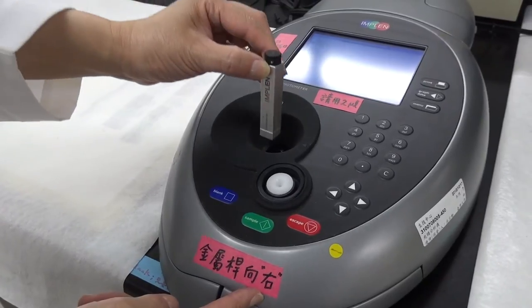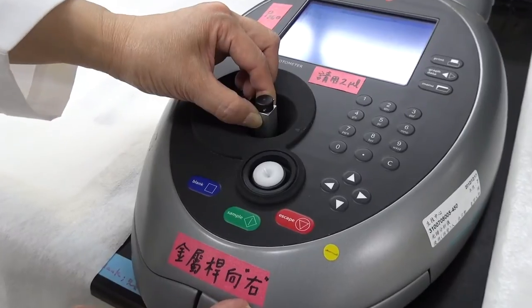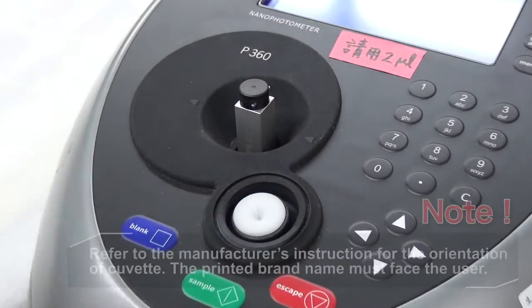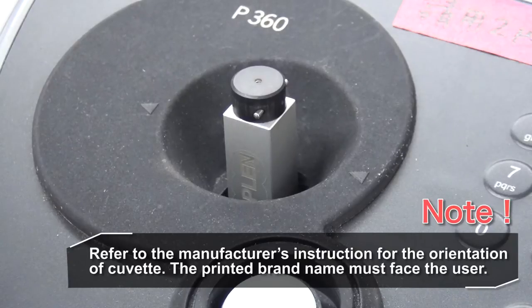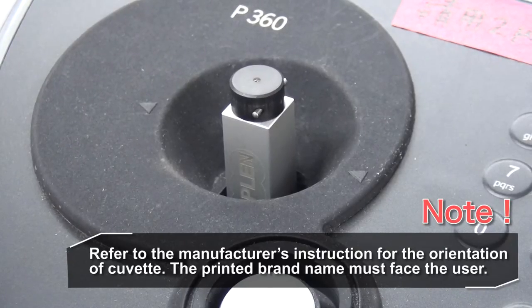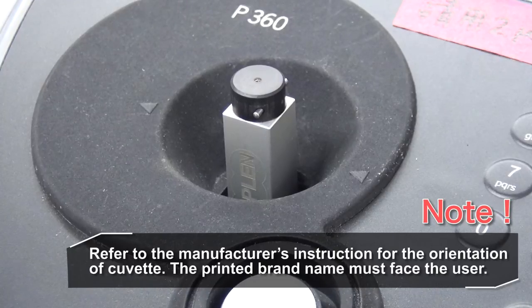Note, the light source shines from right to left. The clear side of the cuvette must be perpendicular to the incoming light. Please refer to the manufacturer's instruction for the proper orientation of the horizontal metal bar on the cuvette. The printed brand name must face the user.